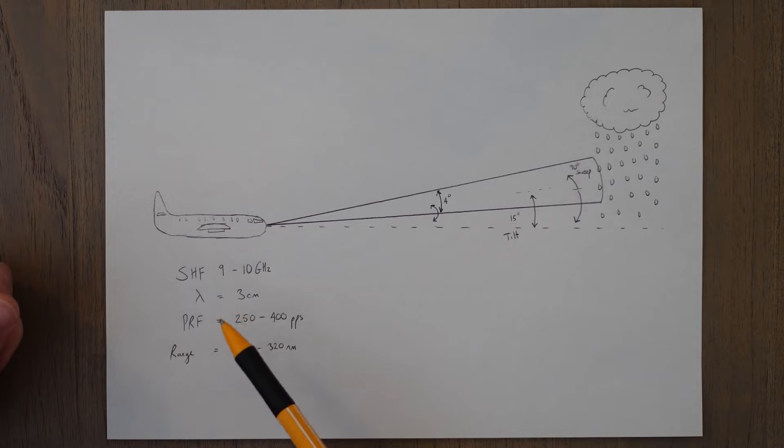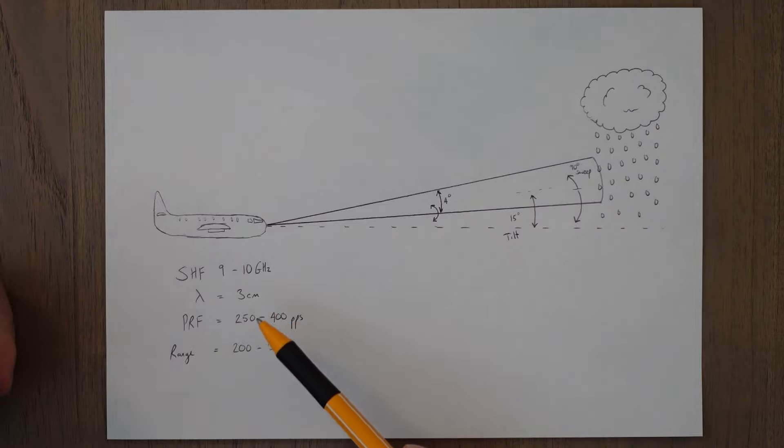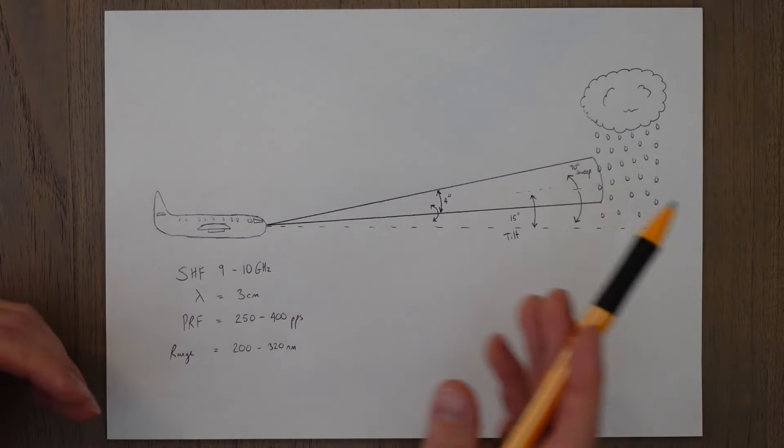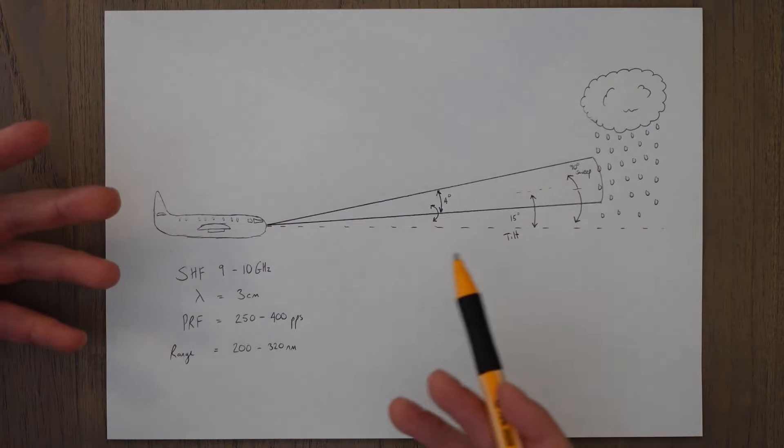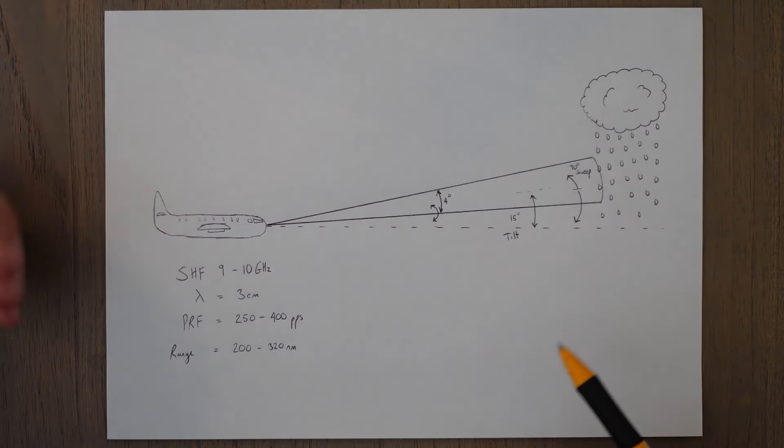On that note the weather radar uses a frequency in the super high frequency band between 9 and 10 gigahertz which gives us a wavelength of about 3 centimeters and a pulse recurrence frequency of 250 to 400 pulses per second. This limits the range to between 200 to 320 nautical miles which will give us plenty of time to maneuver around any weather that might cause damage to the aircraft or passengers on board.